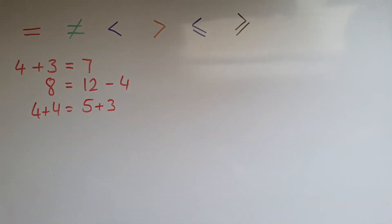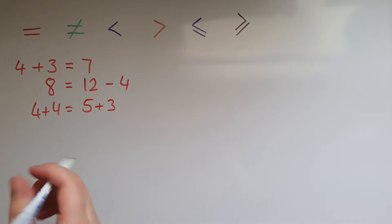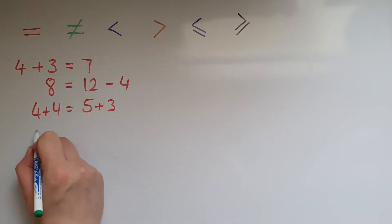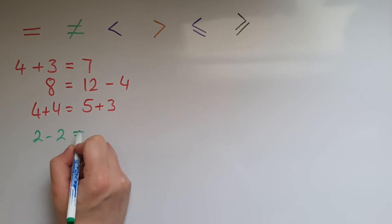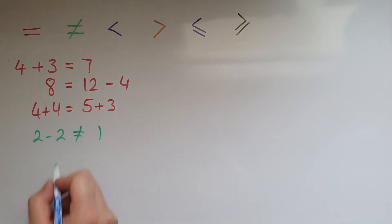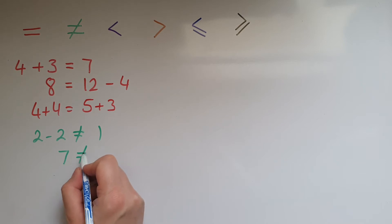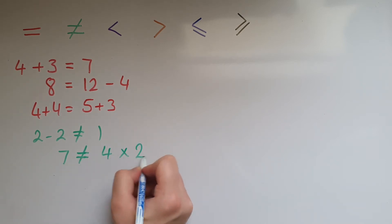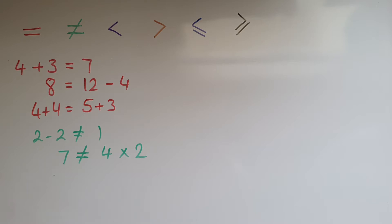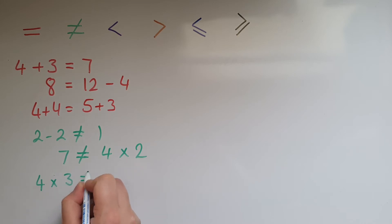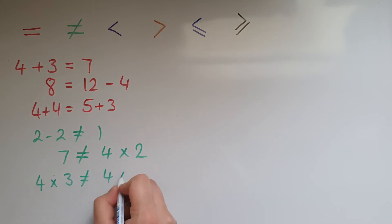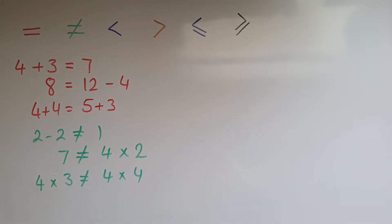Not equal to does completely the opposite. So we'd have: 2 take away 2 is not equal to 1; 7 is not equal to 4 times 2; and 4 times 3 is not equal to 4 times 4. What you have on one side is not equal to what you have on the other side.